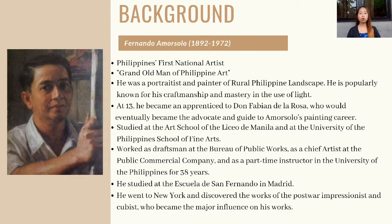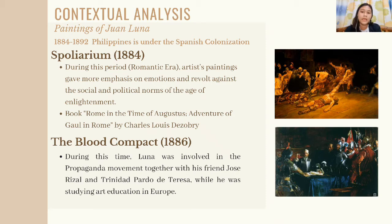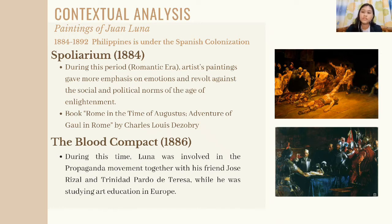From the background of the two authors, which includes their training, education, awards, and work experiences, their capability as painters of these artworks is proven. Our group picked three Juan Luna paintings: the Spoliarium in 1884, the Blood Compact or El Pacto de Sangre in 1886, and the Parisian Life in 1892. For the contextual analysis of Juan Luna's paintings, we will discuss the situation during the time he created these masterpieces and the reasons that pushed him to do so.